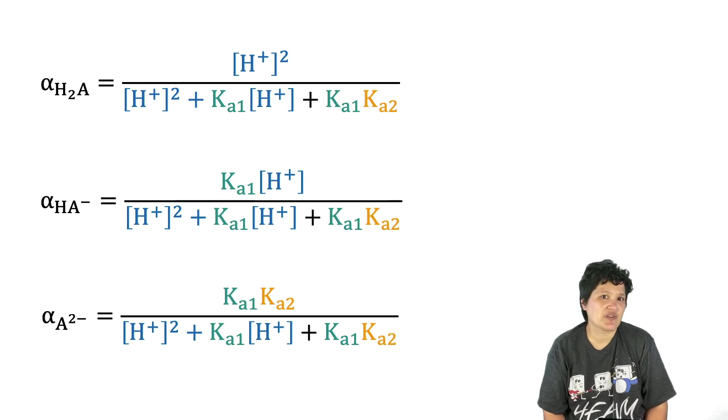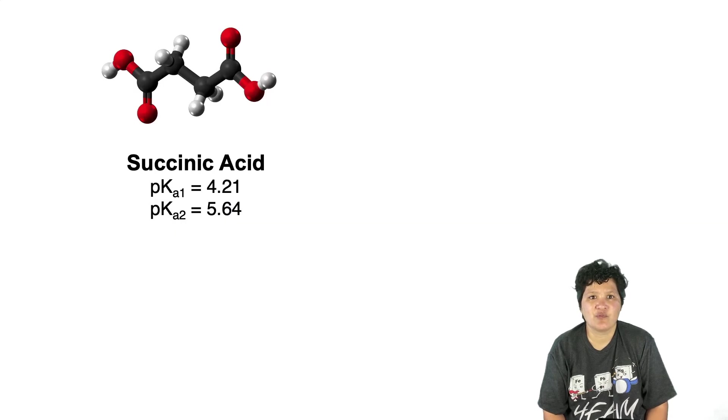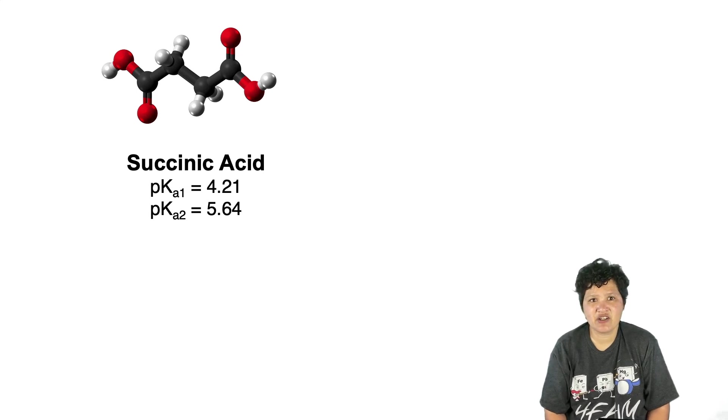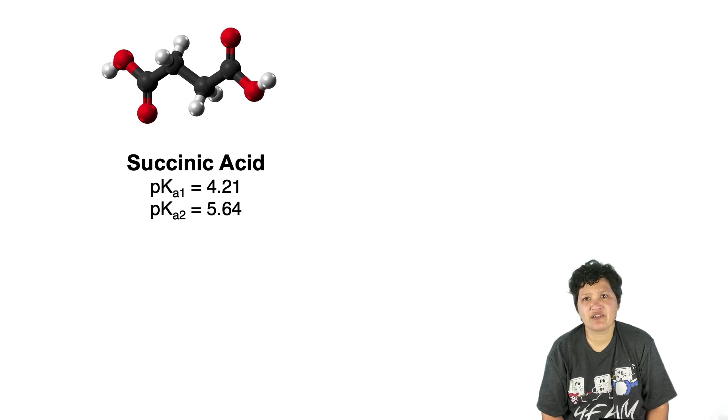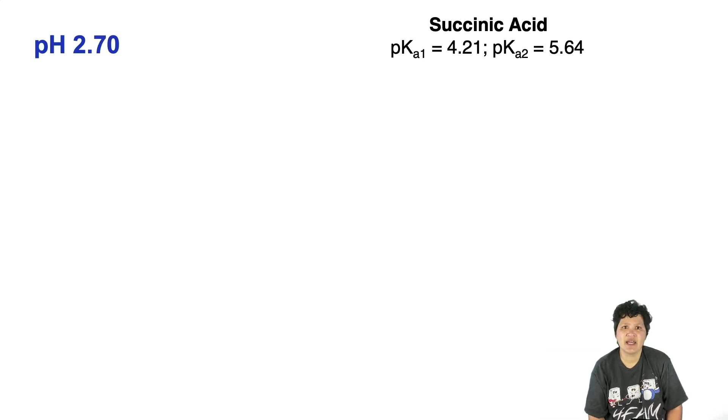Let's take these expressions that we derived for fractional composition and apply it to an actual diprotic acid, butanedioic acid, also called succinic acid. I put the pKa's here. You can see that they're pretty close in magnitude. Let's use this information to calculate the fractional composition at a couple of different pHs, pH 2.70 and pH 4.80. At pH 2.7, our H-plus concentration will be 10 to the minus 2.7. We can use our pKa data to determine that Ka1 will be 10 to the minus 4.21, and Ka2 will be 10 to the minus 5.64.